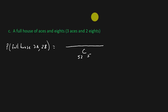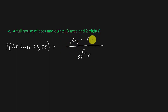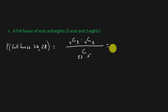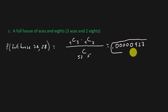How many different ways can we get three aces? That's combination 4 choose 3, since there are four aces and we're choosing three. Then times combination 4 choose 2, since there are four eights and we want two of them. When you punch this into your calculator, you get 0.0000923. That's your probability of getting a full house of three aces and two eights.